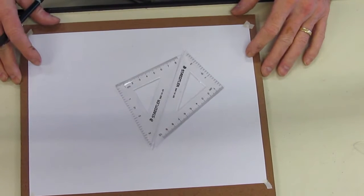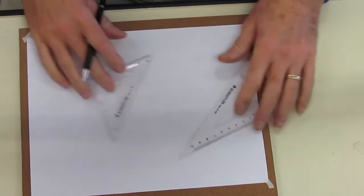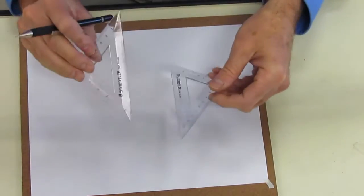Hi, in this video we're going to see how to create a parallel line to another line using only our triangles. This works for any angle.